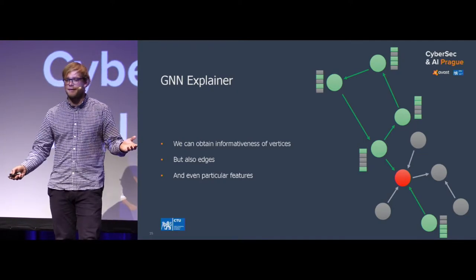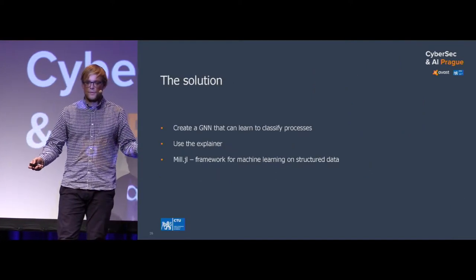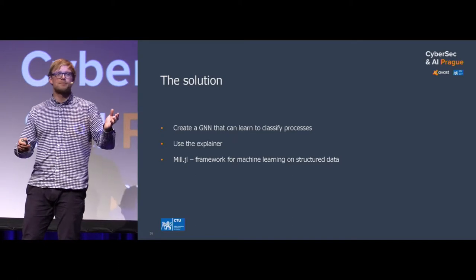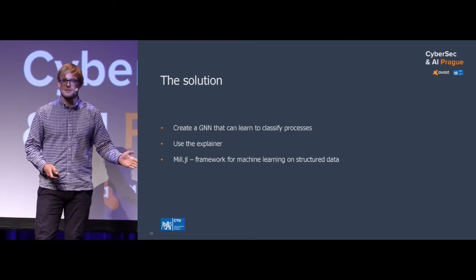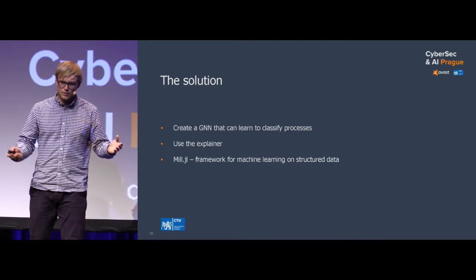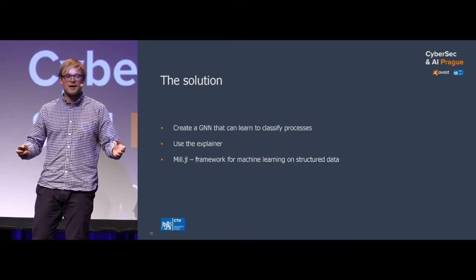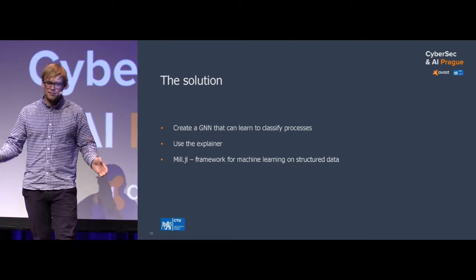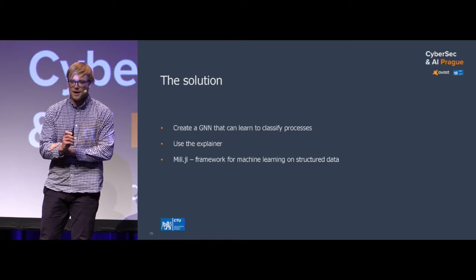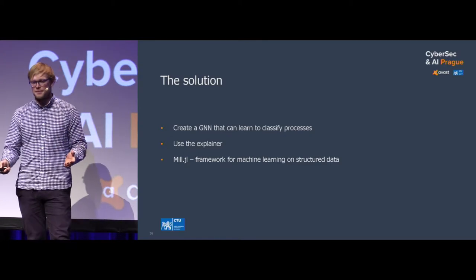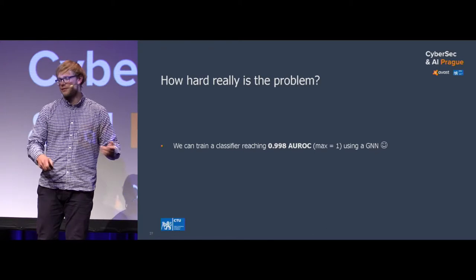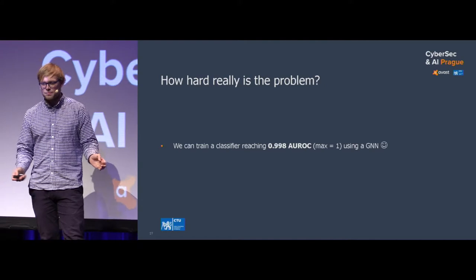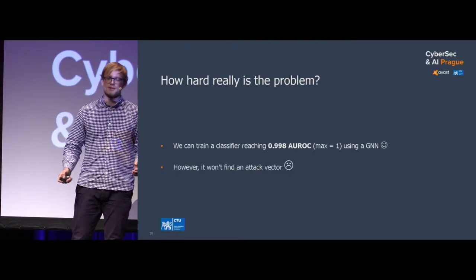So we arrive at an explanation of which nodes were important. It also turns out it can be very easily extended to explain edges as well — which edges were important, which were not — and also features on particular nodes. So we have a classifier that can tell whether something is malware or not. We have this great explainer that can tell us how we came to that conclusion, and we even have a great framework developed by Tomáš that can do that very efficiently. We trained the classifier, it was great — it got an AUC of 0.998, maximum is 1 — and then it didn't find the attack vector.